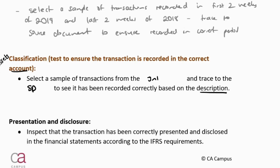Lastly, presentation and disclosure has nothing to do with the actual recording of the transaction in the accounting records — it's about the financials. Has it been correctly presented on the face of the financials and disclosed in the notes? It's a simple inspection of those financials. For one mark, it's easy to get. Now let's move on to account balances.